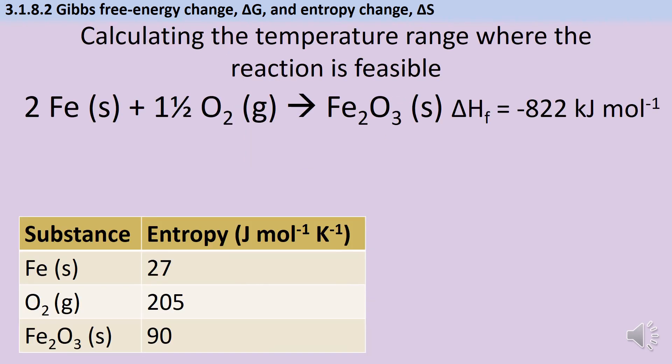A really common exam question is to be asked to identify the range of temperatures where a particular reaction will be feasible. So we're going to be given a table of data that gives us the entropy for each reactant and product and also a ΔH value. So here it's ΔH of formation, and then this happens to be a formation reaction, so that is actually the entropy change of the whole reaction.